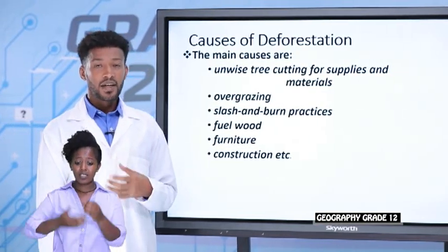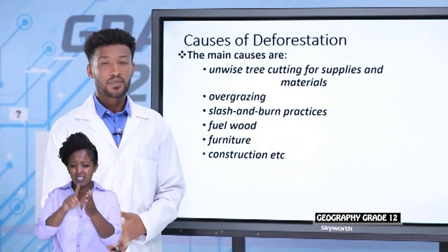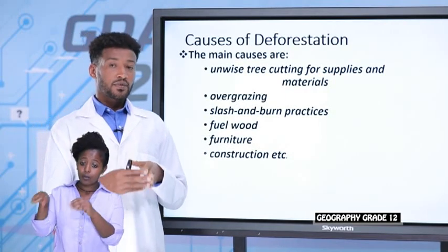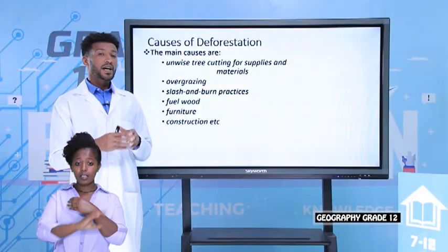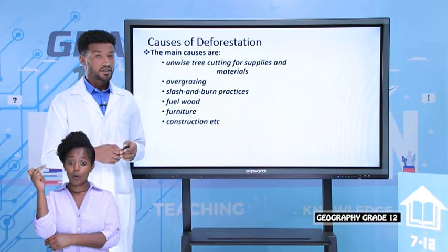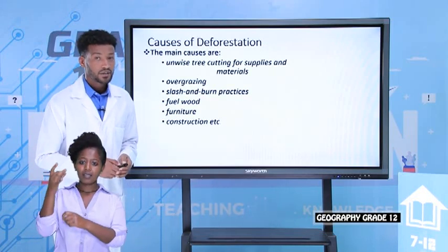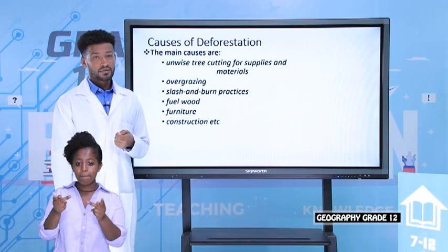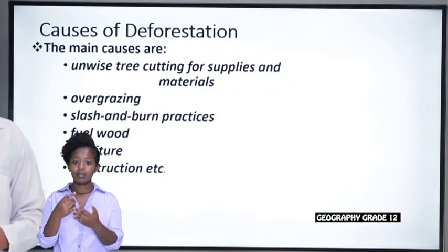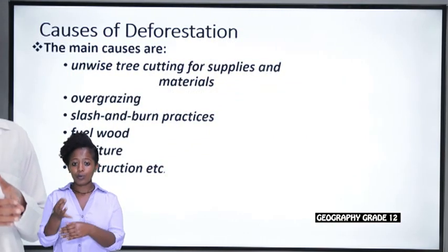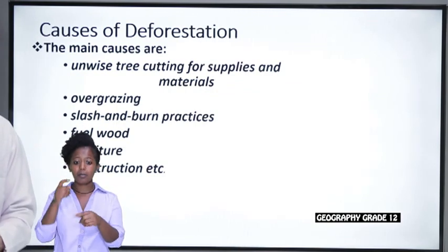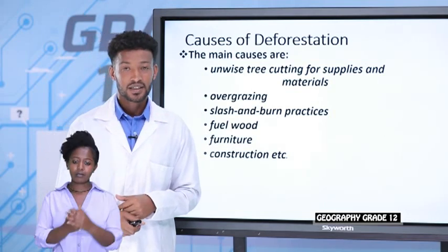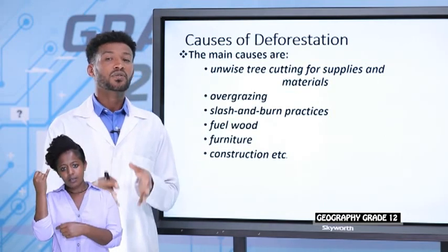The amount of forest coverage in Ethiopia is getting decreased from time to time. Before the 18th century, 14% of the country was covered by forests, but right now less than 3% of the total land mass is covered by forests. This shows the amount of forest coverage is getting depleted, and there are some causes of this deforestation in our country.